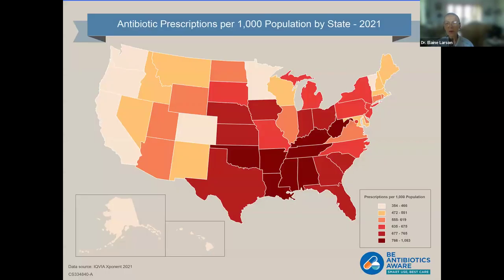This is antibiotic prescribing per 1,000 population by state — outpatient prescribing. You can see the variation: the darkest prescribing is located more in the south, while in the west it's more conservative. These variations by location don't really make sense because you can't assume that people have different needs for antibiotics across the country.